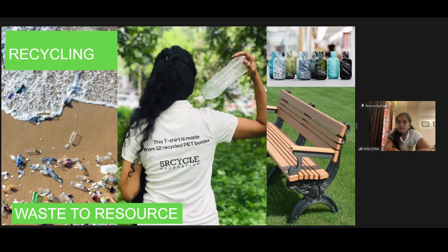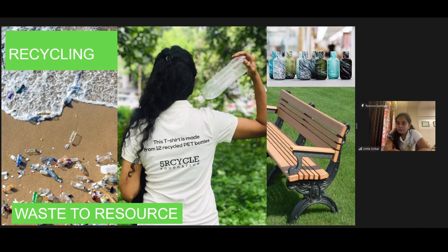In recycling, you actually collect all the plastic, clean it, and then melt or pressurize it to make t-shirts, benches, bottles, or any kind of lumber product. The t-shirt I'm wearing is actually made out of 12 plastic bottles — so it's a resource, right? You've converted this plastic waste into a resource and created such beautiful products. These are of similar value, though when you convert it, there is some reduction in properties. That's why the products made from it have to be mixed with a little bit of virgin plastic to have good quality for a specific application.